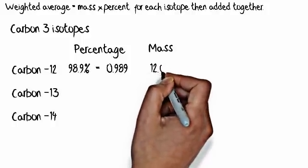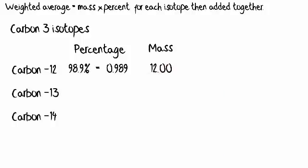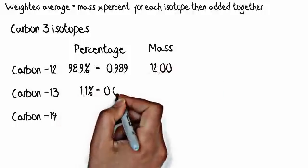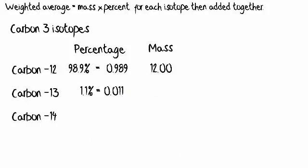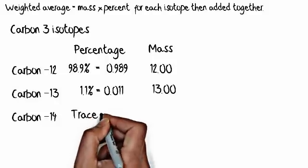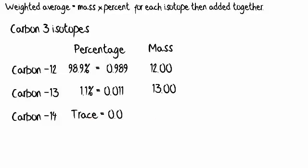98.9 percent of all carbon atoms are carbon-12 atoms. The mass is 12.00. For carbon-13, 1.1 percent of all carbon atoms are carbon-13.